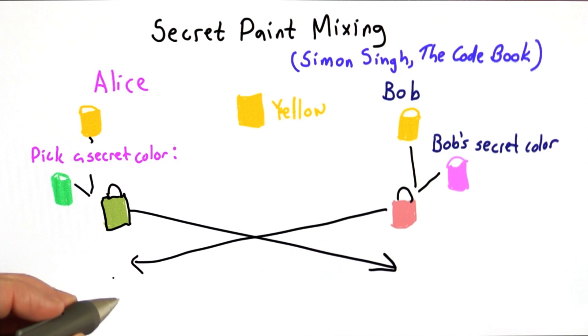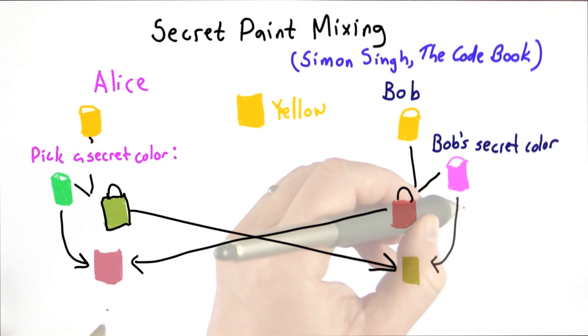Once they've received the other party's colors, they mix their secret color with the other party's mixed color. At this stage, both parties should have the same color.